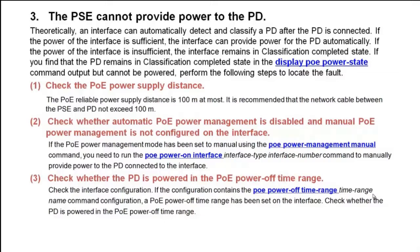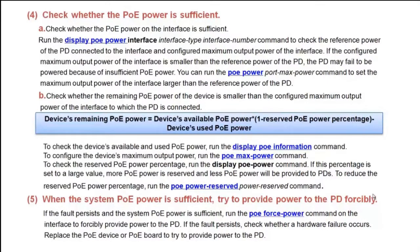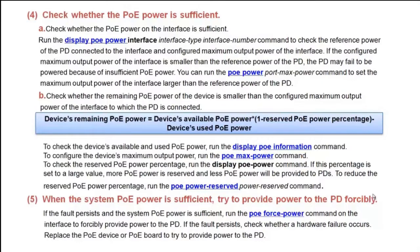3. Check whether the PD is powered in the PoE power off time range. Check the interface configuration. If the configuration contains the PoE power off time range command, a PoE power off time range has been set on the interface. Check whether the PD is powered within that time range. 4. Check whether the PoE power is sufficient. Run the display PoE power interface command to check the reference power of the PD and the configured maximum output power of the interface. If the configured maximum output power is smaller than the reference power of the PD, the PD may fail to be powered. Run the PoE power port max power command to set the maximum output power larger than the reference power of the PD.